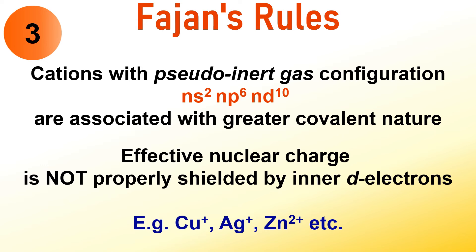Continuing, this is the second part of the third rule. We can also state that cations with pseudo inert gas configurations characterized by ns²np⁶nd¹⁰ configurations tend to display a greater covalent character. This is primarily due to poor shielding of nuclear attraction by the inner d electrons. Consequently, the outer electrons experience a stronger nuclear attraction, resulting in smaller cations. And you know that smaller cations are more effective at polarizing anions, leading to a higher covalent character in the bond. Examples of such cations include Cu⁺, Ag⁺, and Zn²⁺, among others.